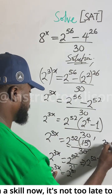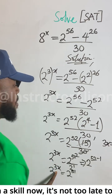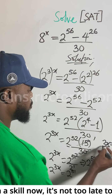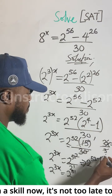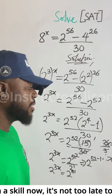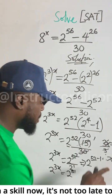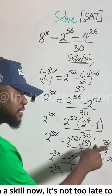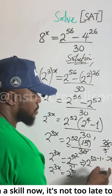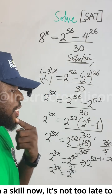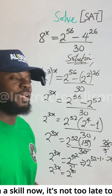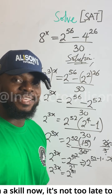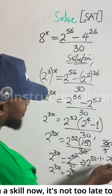According to exponential equations, any time the bases are the same, equate the powers. So now 3x equals 51. To solve for x, divide both sides by 3 — the coefficient of x. Therefore x equals how many times 3 goes into 51, which gives us 17 times, because 3 times 17 equals 51.